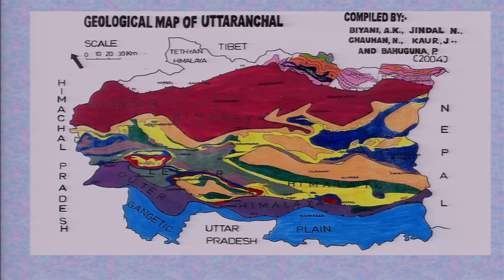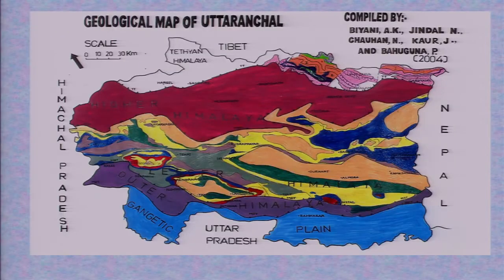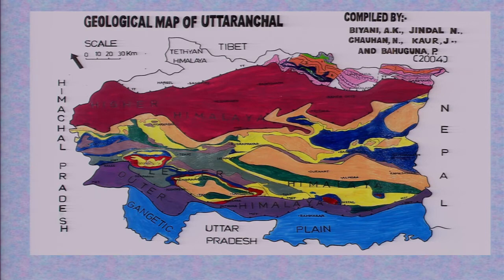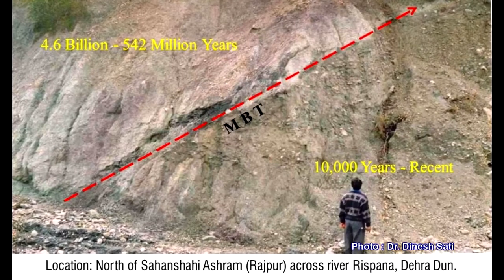In this map, to the south is Uttar Pradesh, to the west is Himachal Pradesh, to the east is Nepal, and to the north is Tibet. The white areas indicate Indo-Gangetic alluvium, which is thrust into the outer Himalaya by the Main Frontal Thrust. Moving upward, the outer Himalaya consists of Siwalik sediments, belonging to the Eocene up through the Pliocene. The Siwalik sediments are then thrust under the Lesser Himalaya along the Main Boundary Fault.